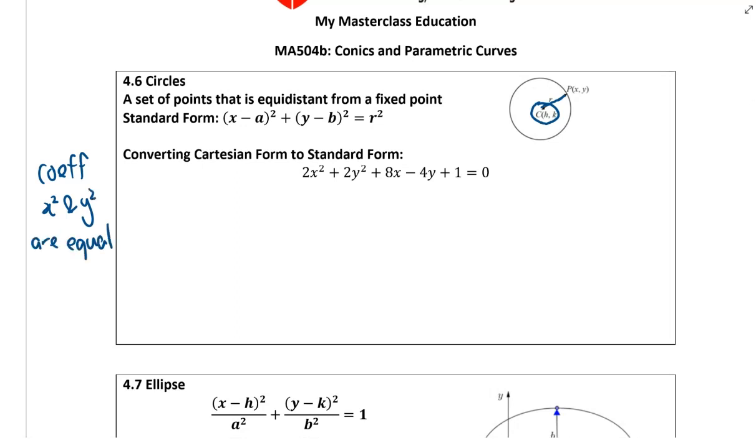Once they are equal, you know that this is a circle. So first I have to divide by 2: x square plus y square plus 4x minus 2y plus half equals to zero. I group all the x's together plus 4x, plus y square minus 2y plus half equals to zero.